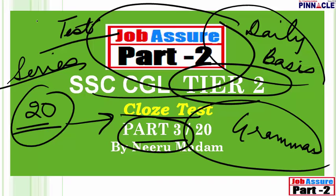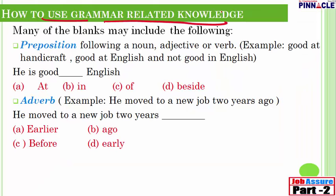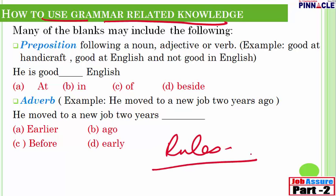Let us use grammar-related knowledge for solving cloze tests. A lot of students tell me they know all the grammar rules but don't know how to apply them in cloze tests and para jumbles. If there is a grammar-related blank in a cloze test, it could be related to prepositions, adverbs, nouns, adjectives, etc.